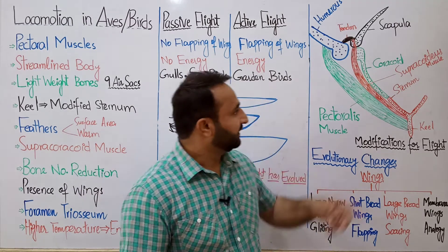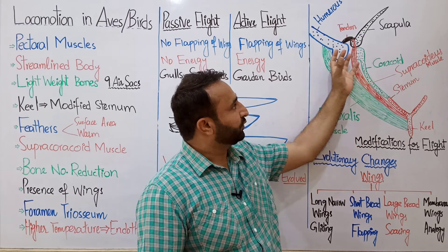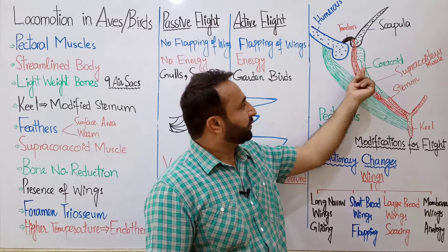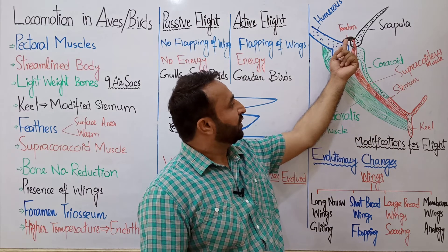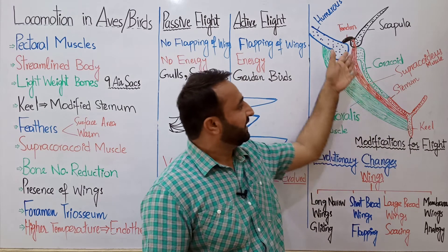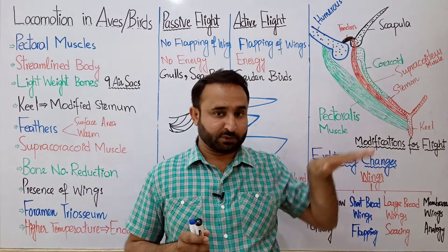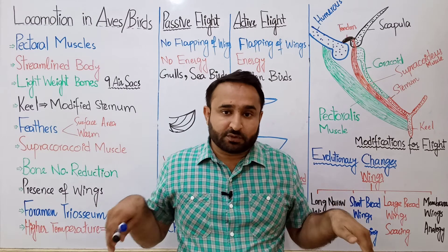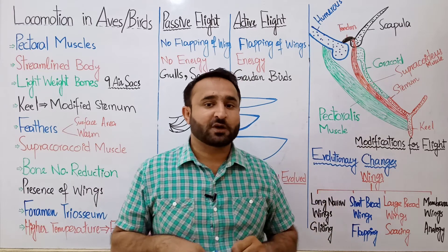Supra-coracoid muscles — यह coracoid bone जो एक तरफ से sternum के साथ attached है और दूसरी तरफ से humerus और scapula के साथ joint बना रही है। इस coracoid bone के ऊपर से ये muscles आ रहे हैं — red color में — जो supra-coracoid tendon की मदद से humerus के साथ attached हैं और दूसरी तरफ से keel के साथ। ये upward stroke देते हैं। जब पर नीचे आते हैं तो pectoralis muscles काम करती हैं, और जब recovery stroke — पर ऊपर जाना है — तो उसके लिए supra-coracoideus muscles मौजूद हैं।